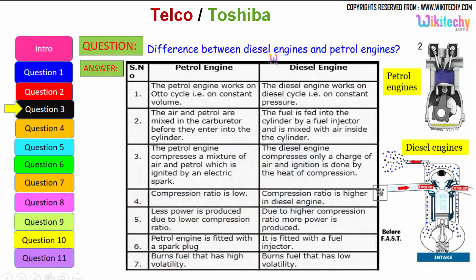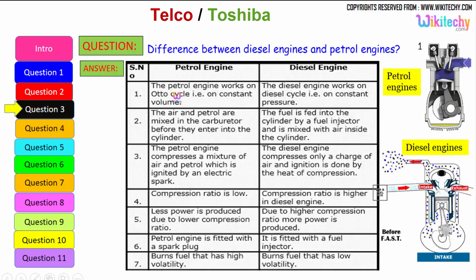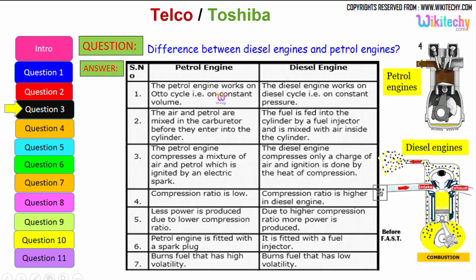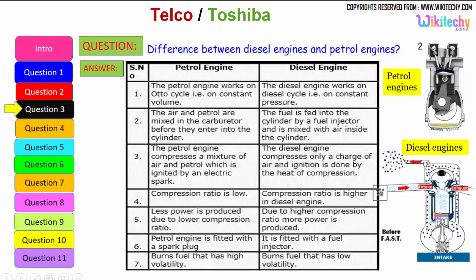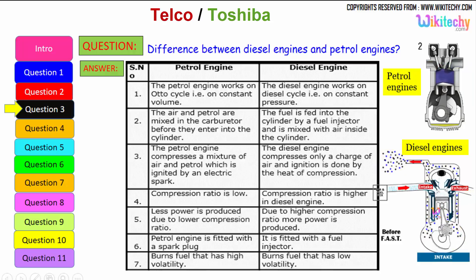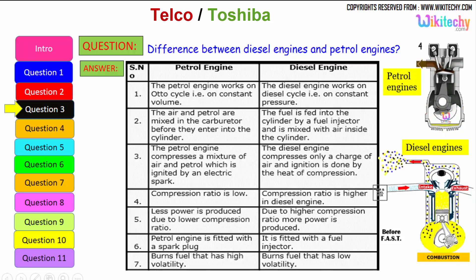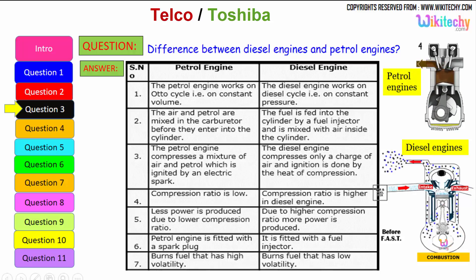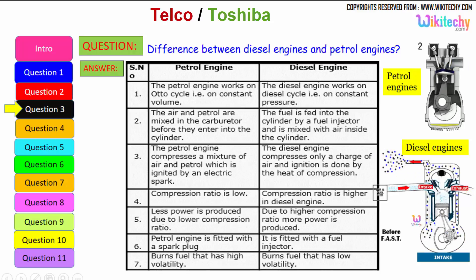Let us see the difference between the diesel engine and the petrol engine. The petrol engine works on the Otto cycle, therefore on constant volume. Whereas the diesel engine works on the diesel cycle, on constant pressure. The air and petrol are mixed in the carburetor before they enter into the cylinder, whereas in the diesel engine, fuel is fed into the cylinder by a fuel injector and is mixed with the air inside the cylinder.